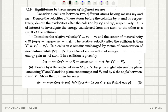It is of interest to investigate the energy transferred from one atom to the other as a result of the collision. We introduce the relative velocity capital V = V1 minus V2, and the center of mass velocity C = (M1*V1 + M2*V2) divided by (M1 + M2). The relative velocity after the collision is V' = V1' minus V2'. We have shown that the magnitude of V' and V are the same by conservation of energy, and C remains unchanged by virtue of conservation of momentum.